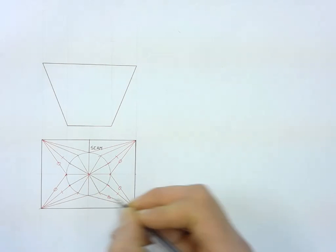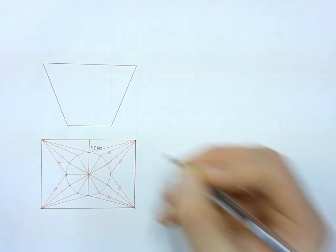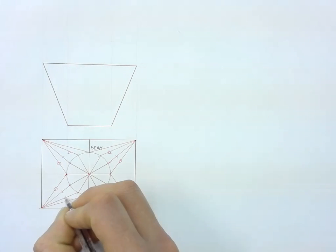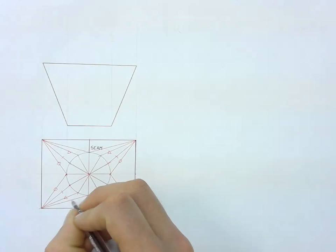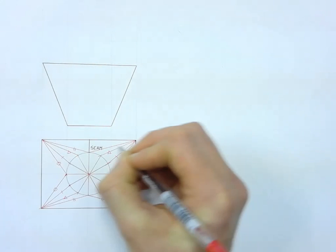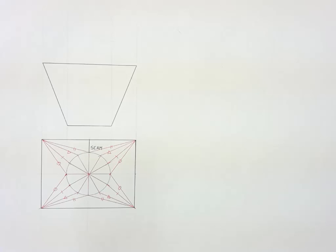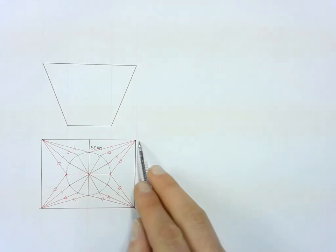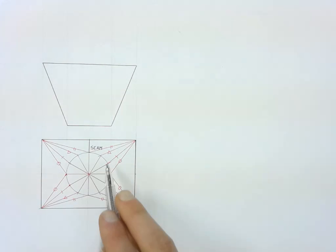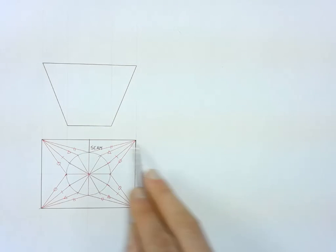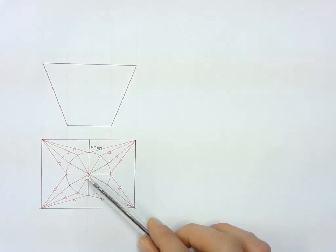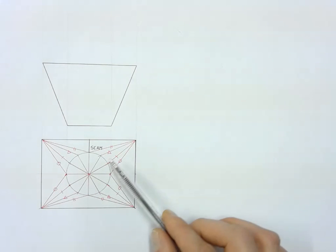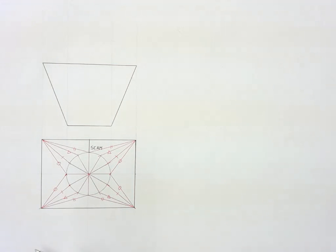This line over here is the same length as that one and the same length as that one — use a triangle. And then this one over here is the same length as that line, which is the same length as that line and that line. That will be common when you have a rectangular base and a circular top — or in this case a circular base and a rectangular top because your front view is flipped around. If that base is centered, you are always going to have a number of lines which are the same length. The last line you will also have to find the true length of is going to be your seam.